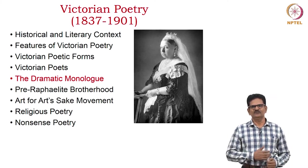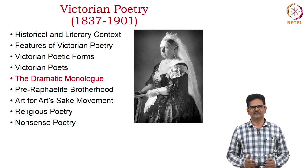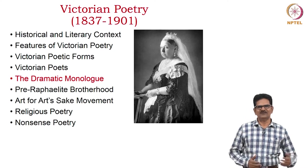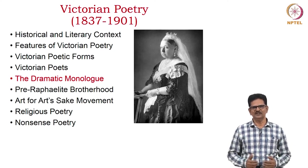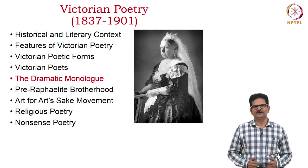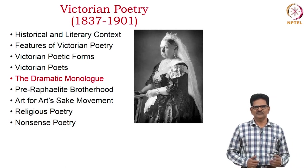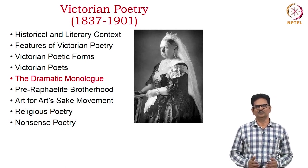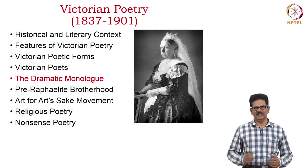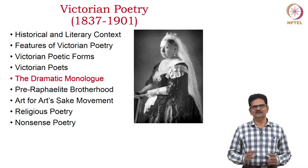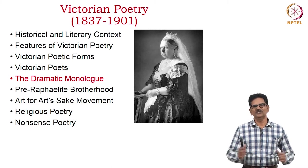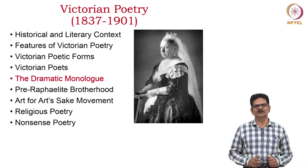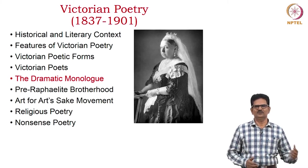We will continue with the Pre-Raphaelite Brotherhood movement during this Victorian period. Also, discuss the Art for Art's Sake movement for a while. Then, discuss two more interesting features of Victorian Poetry.